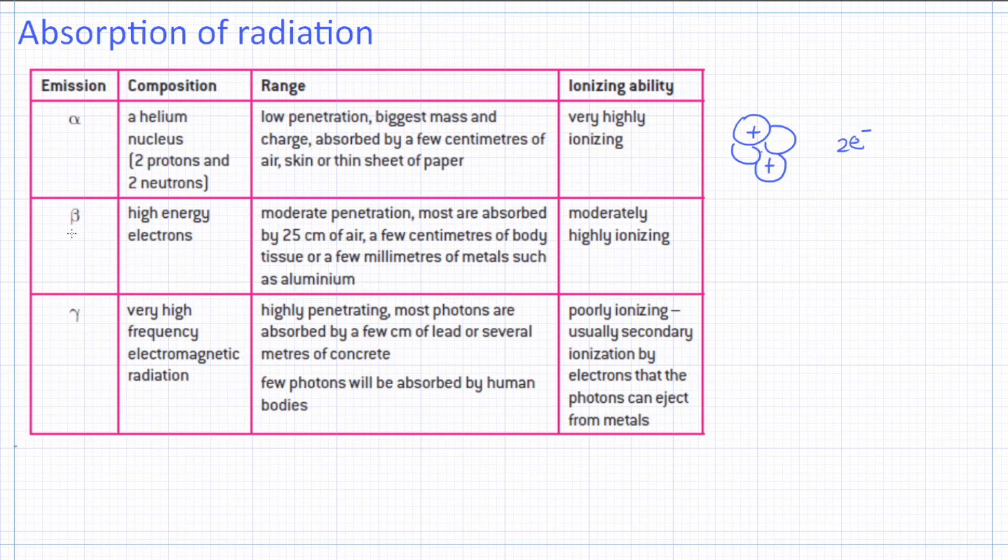Now, beta particles, since they are smaller - they are basically an electron - they are very, very small. So that's why they can actually go quite some distance in air.